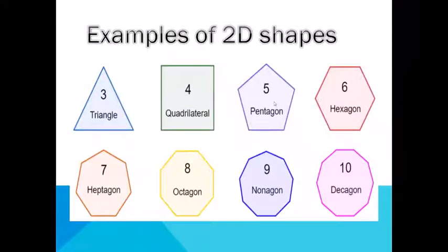Pentagon has 5 sides and 5 corners. Hexagon has 6 sides and 6 corners. Heptagon has 7 sides and 7 corners. Octagon has 8 sides and 8 corners. Nonagon has 9 sides and 9 corners. And decagon has 10 sides and 10 corners.